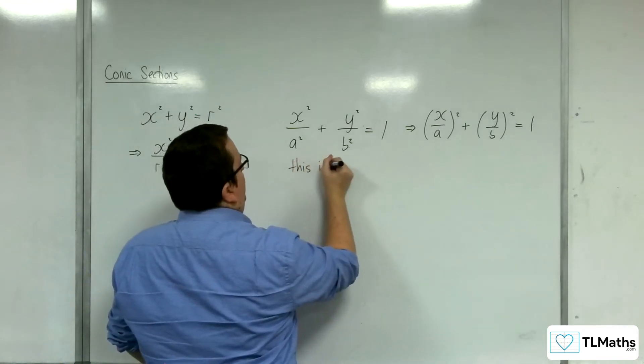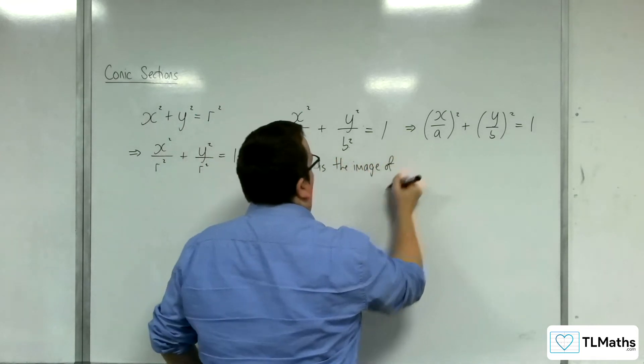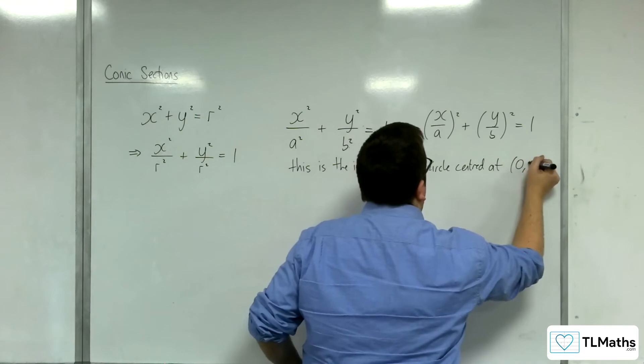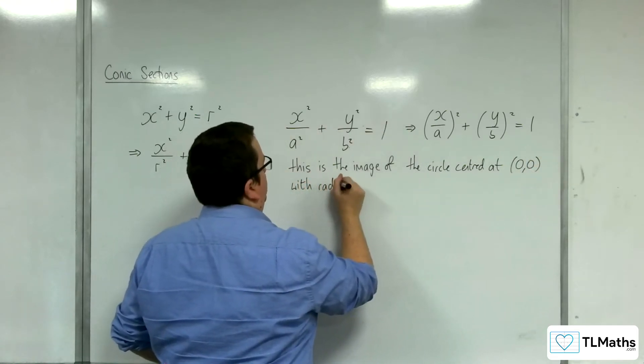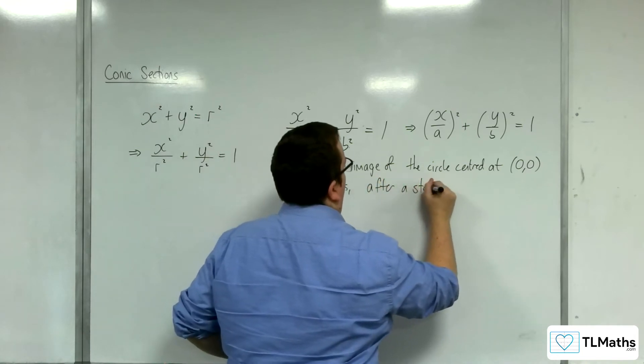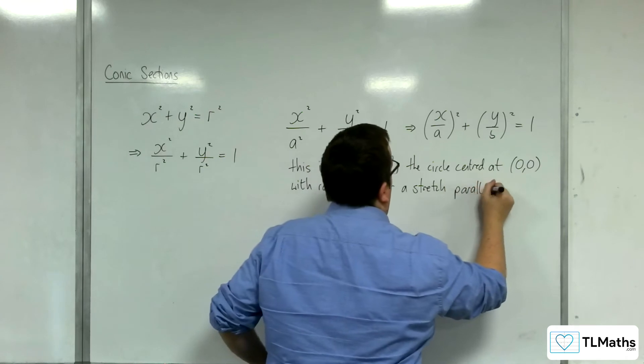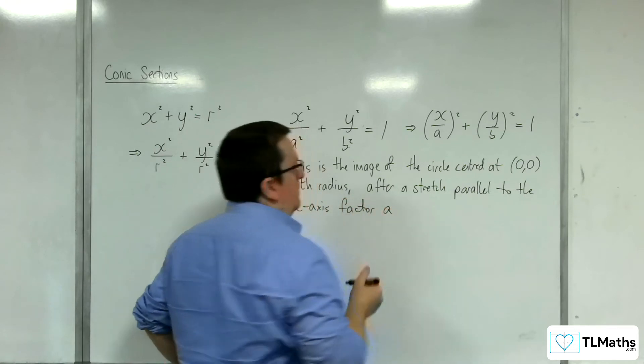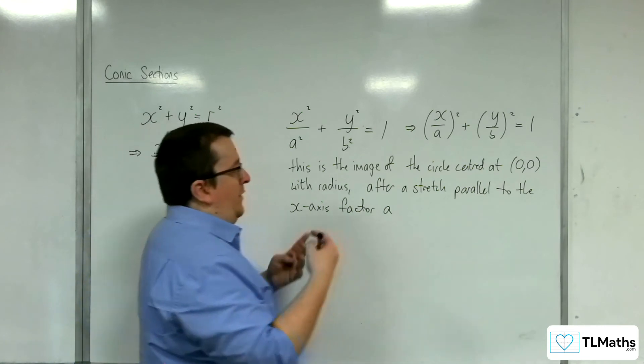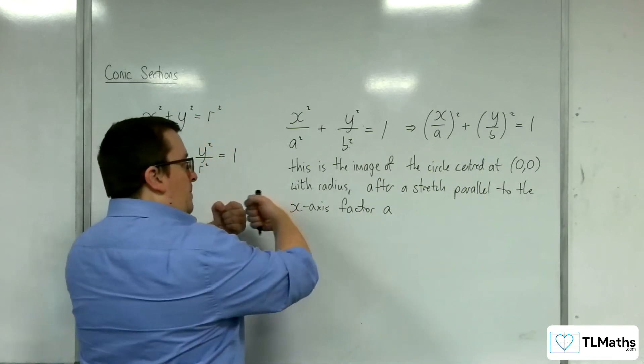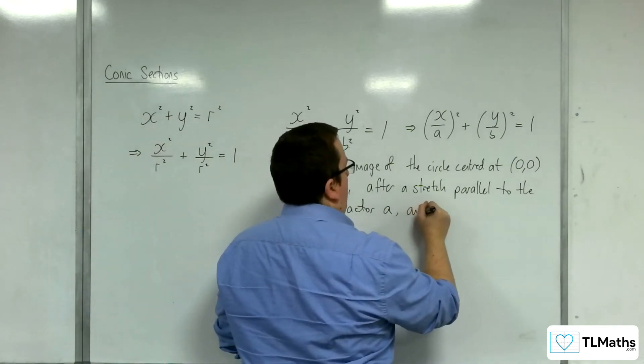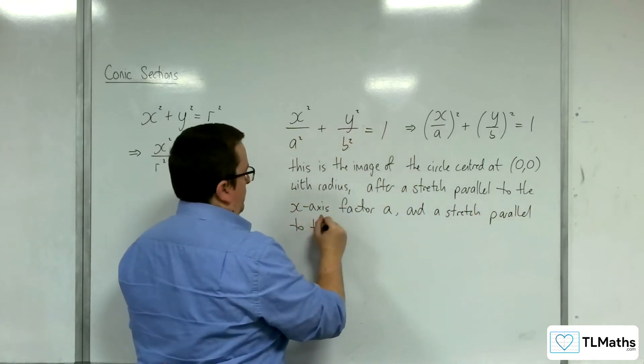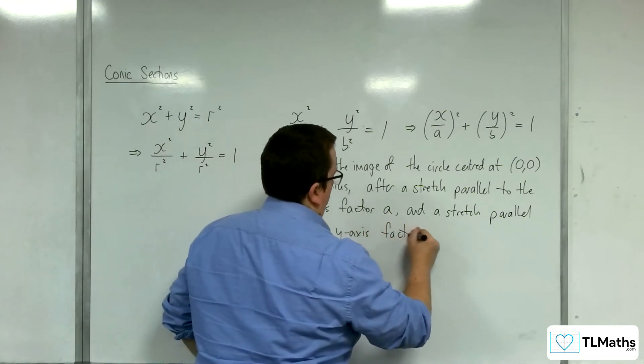This is the image of the circle centered at the origin with radius 1 after a stretch parallel to the x-axis factor a. So because you're replacing x with x over a or 1 over a times x, that is a stretch parallel to the x-axis factor a. And a stretch parallel to the y-axis factor b.